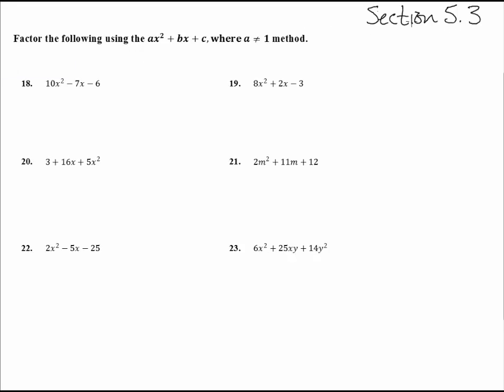Here we are in section 5.3, numbers 18 through 23, and it says factor the following using this method where A does not equal 1, which means we're going to take A times C and use that to find the factors to split up B. We've got to split B so we have four terms.